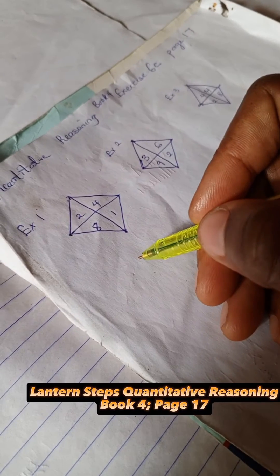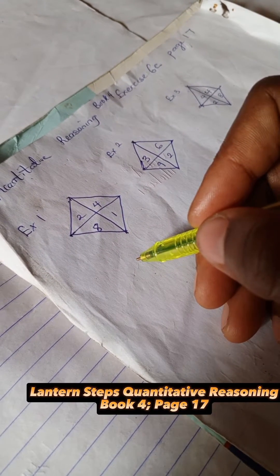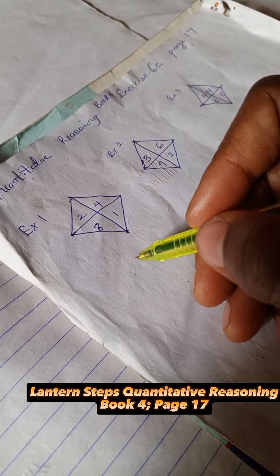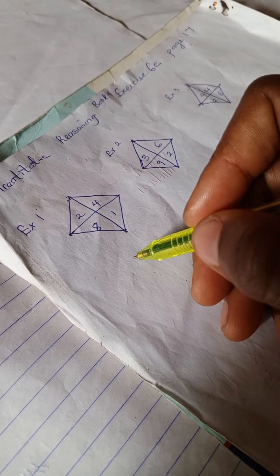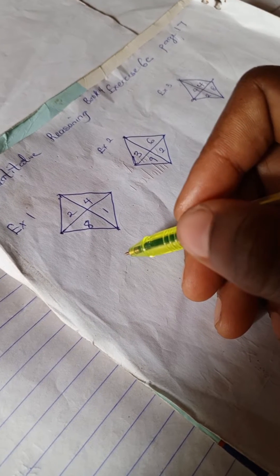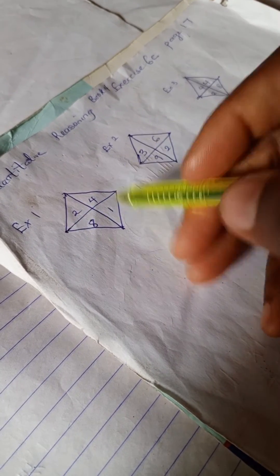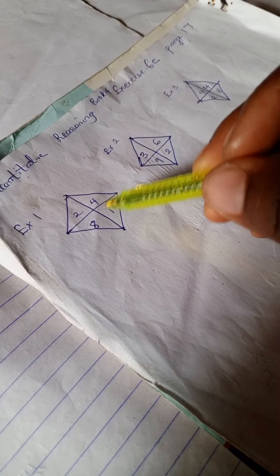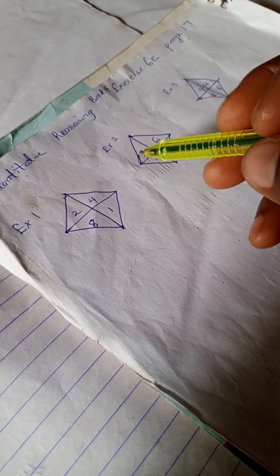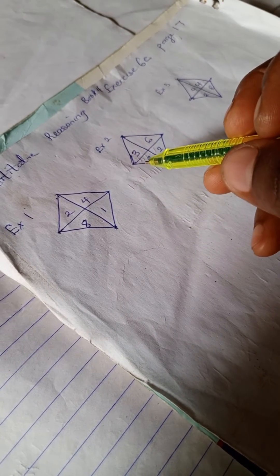Welcome to quantitative reasoning solution section. We're going to look at book 4 exercise 6c on page 17 of Lantern Quantitative. We have these three examples and we're going to try out using basic operations.